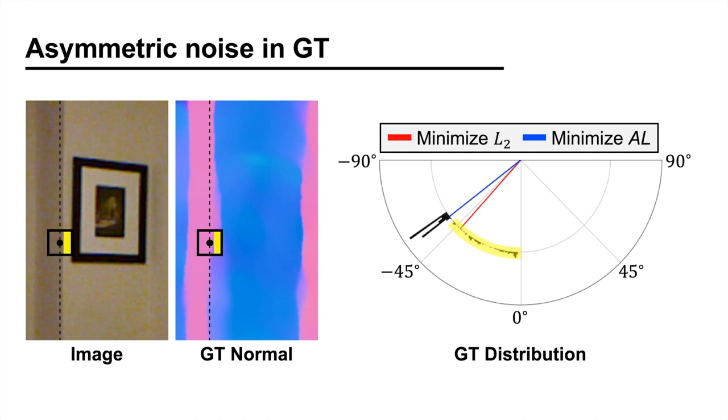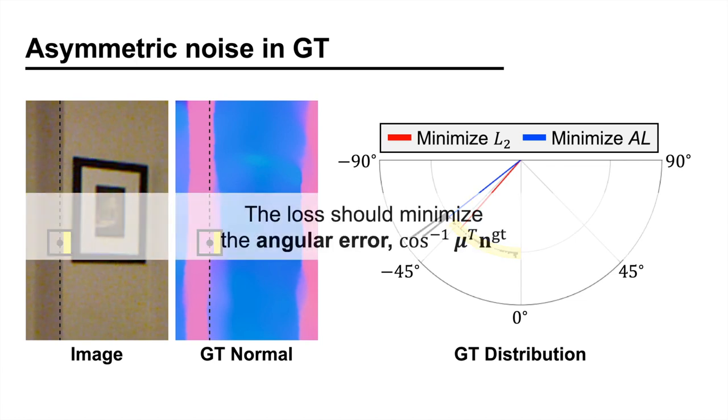The red and the blue lines show the directions that minimize the L2 loss and the angular loss. We can see that the L2 loss, which is minimized at the mean, is sensitive to the asymmetric noise. Instead, the network should learn the median direction, which can be achieved by minimizing the angular error.